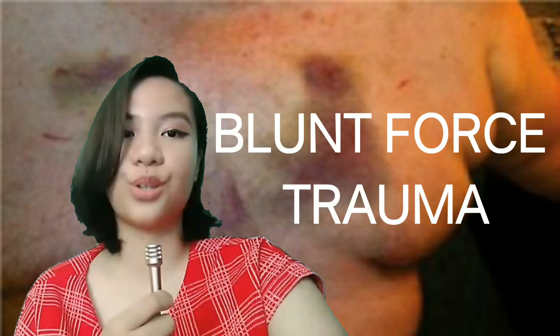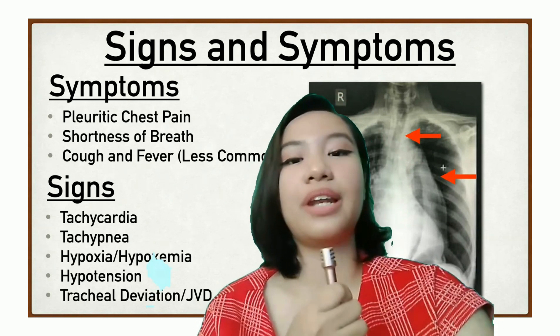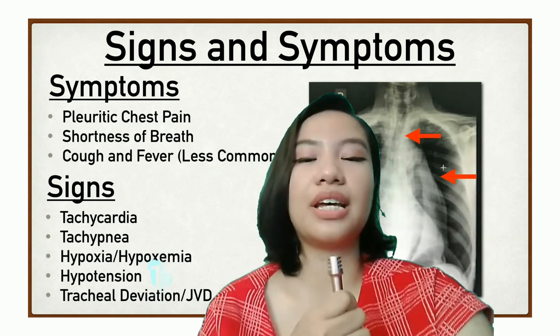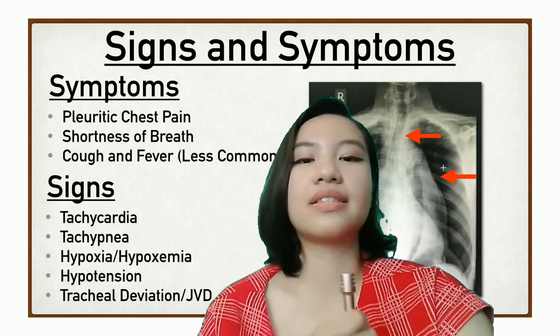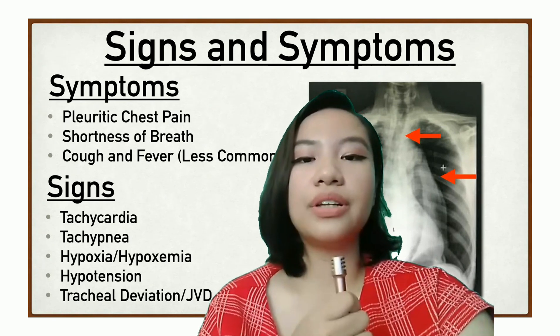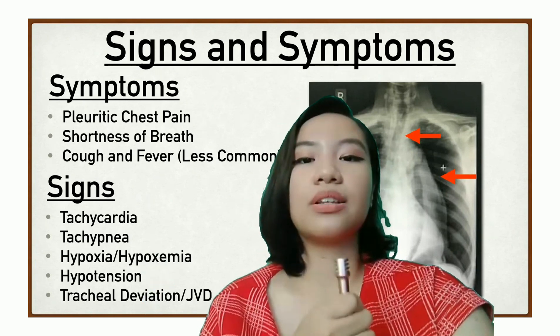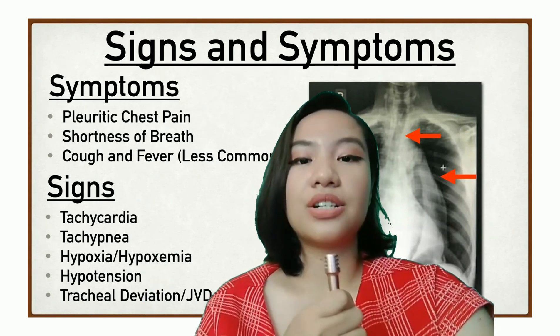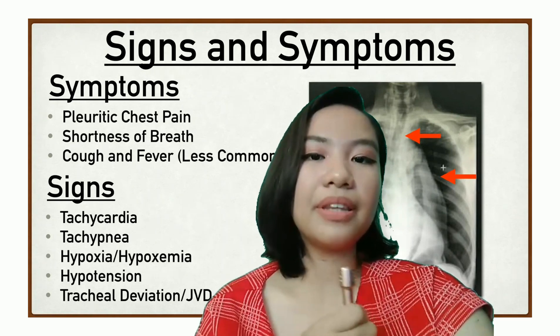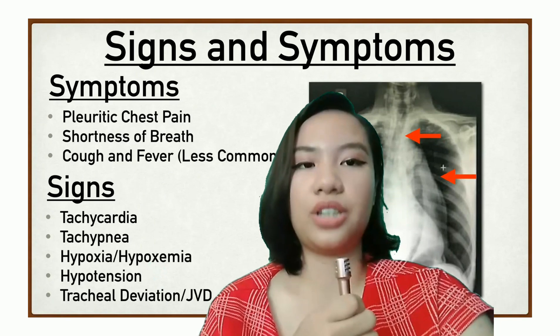The main cause of tension pneumothorax is blunt force trauma. Signs and symptoms occur when air accumulates between the chest wall and the lungs, increasing pressure in the chest and reducing the amount of blood returned to the heart. Symptoms include chest pain, shortness of breath, rapid breathing, racing heart, and shock.